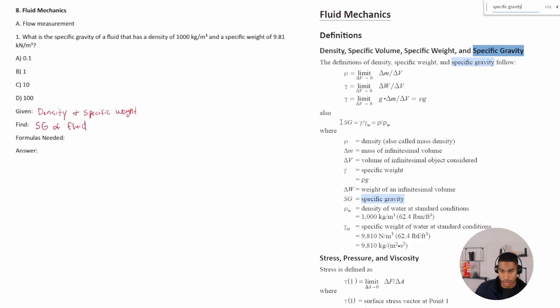All right, so it says SG is equal to the density or the unit weight over the unit weight of water, which is equal to the density over the density of water.